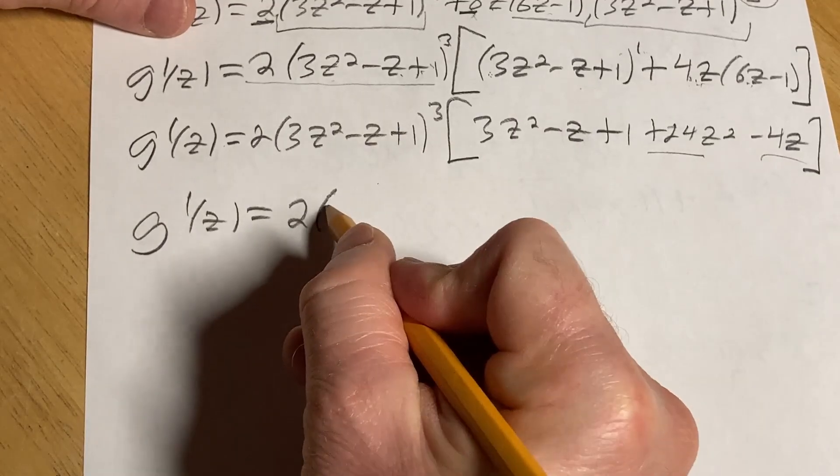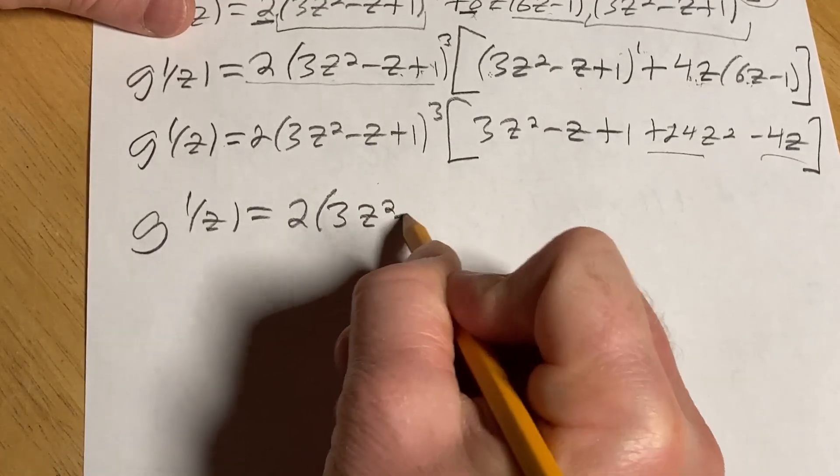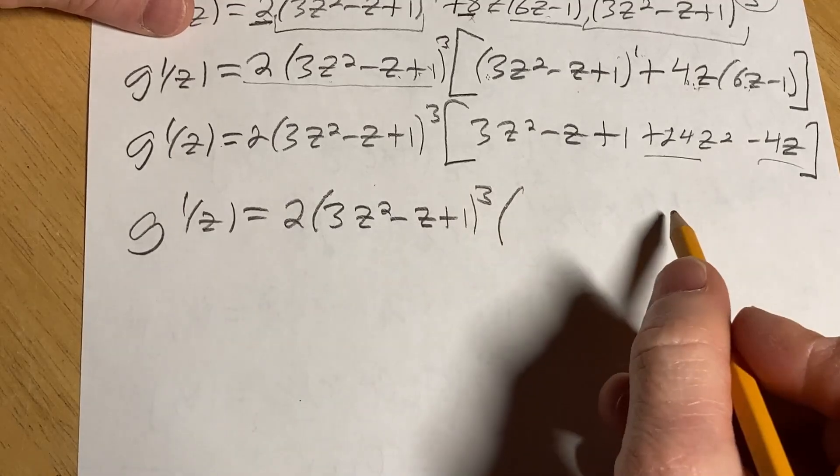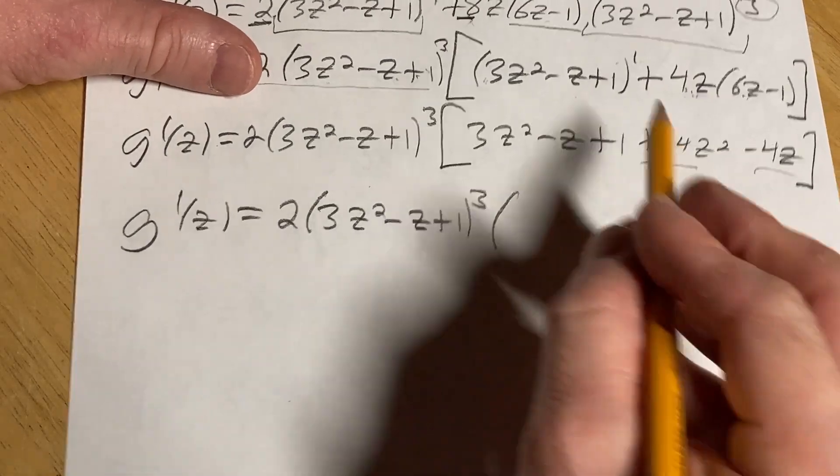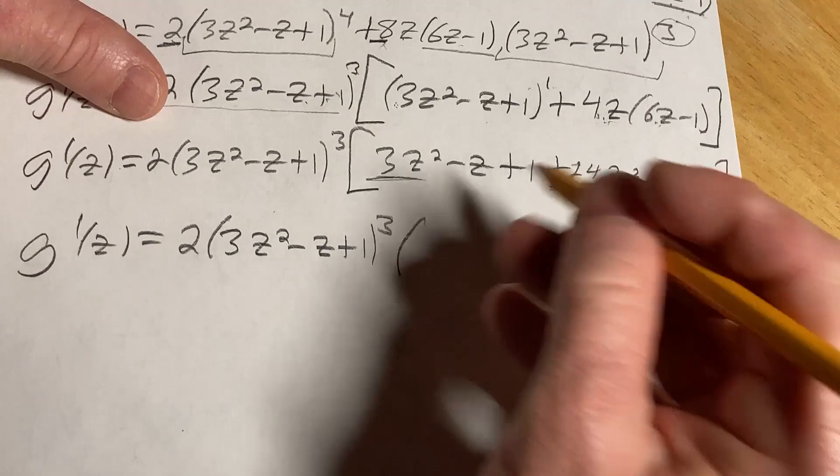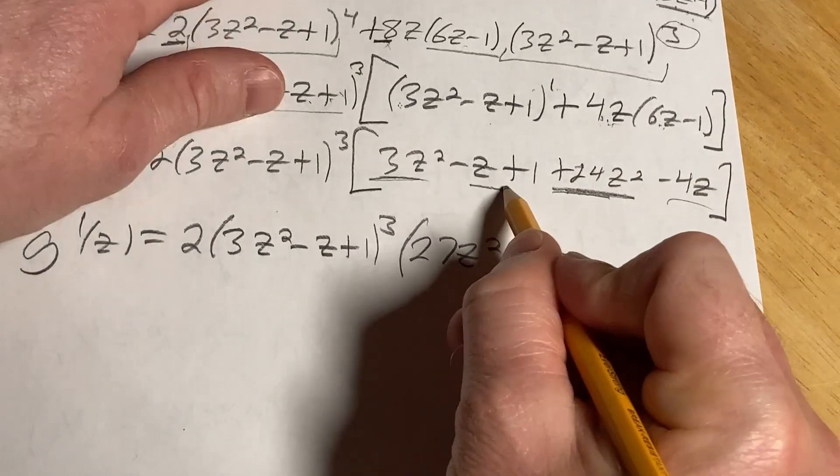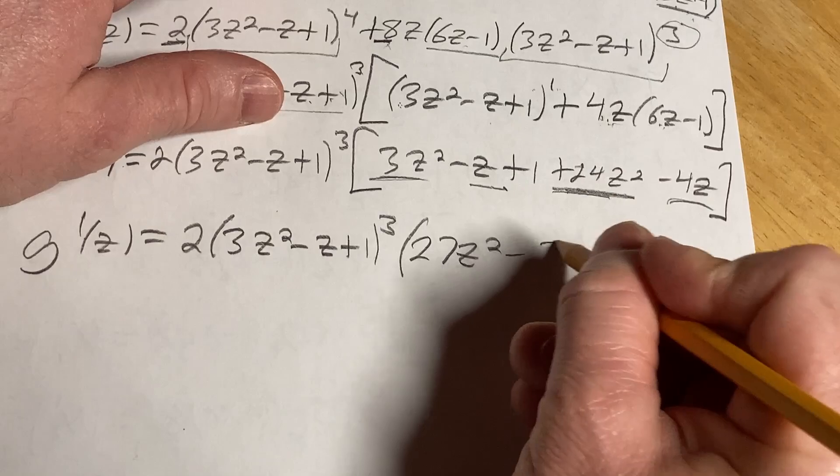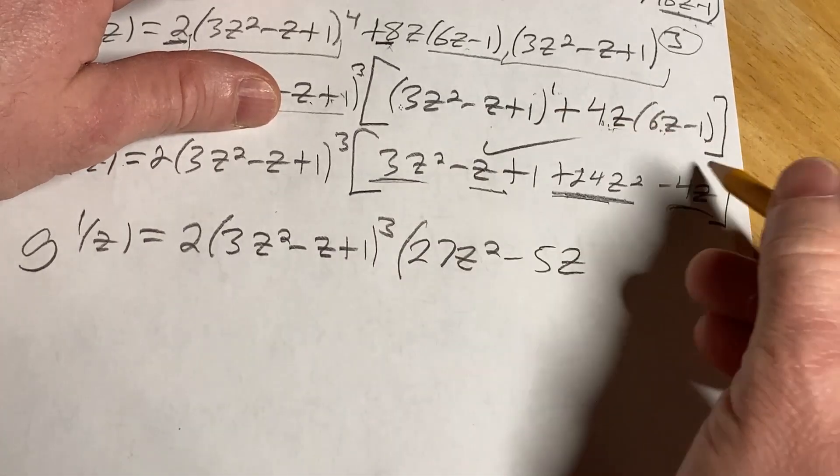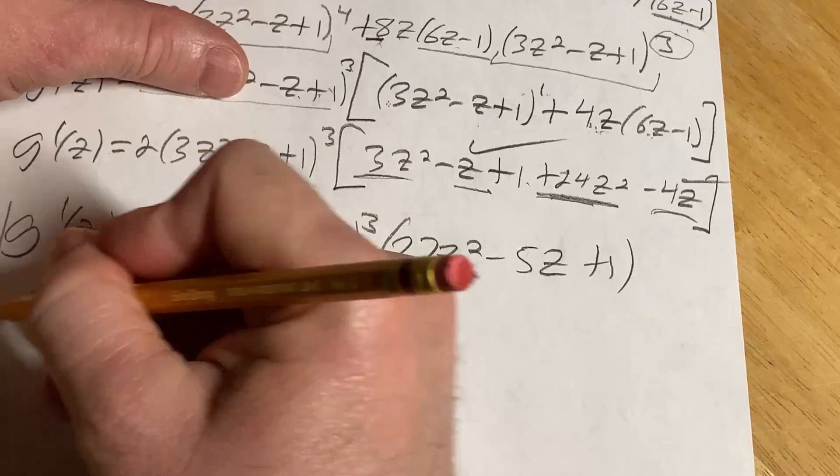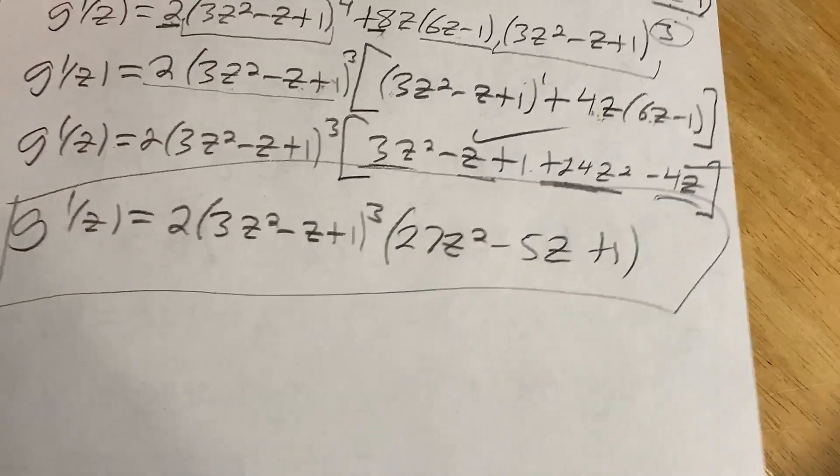Continuing, we have 2 parentheses 3z squared minus z plus 1 cubed. And let's combine our z squareds here. So it looks like we have 3z squared plus 24z squared. It's going to give us 27z squared. Negative z minus 4z is negative 5z. That takes care of those. And then we just have this 1 hanging out. And that, my friends, is the correct answer to this problem.